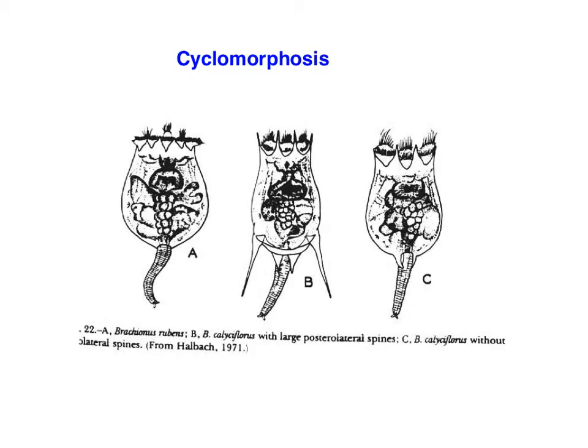What changes is that some rotifers will develop lateral spines. Sometimes you'll see the same species with individuals both with and without spines. This difference does not represent genotypic differences within the population, but is in fact an induced phenotypic difference triggered by environmental circumstances.